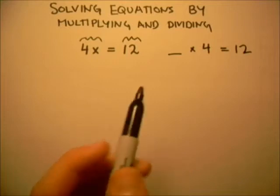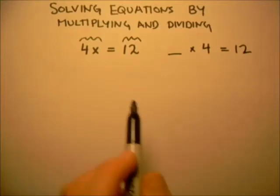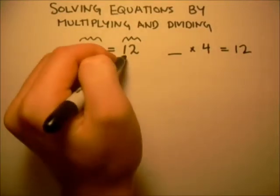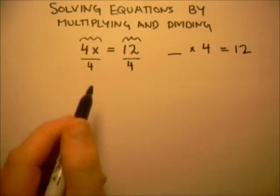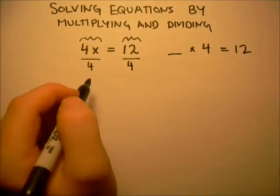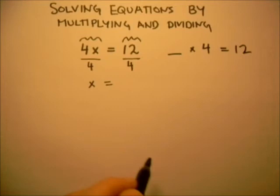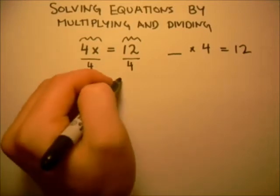In order to figure out what x is, all we need to do is divide both sides of this equation by 4. The 4s on this side cancel, and we just get x. And on the other side, we have 12 divided by 4, which is 3.